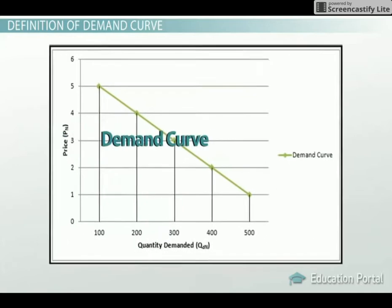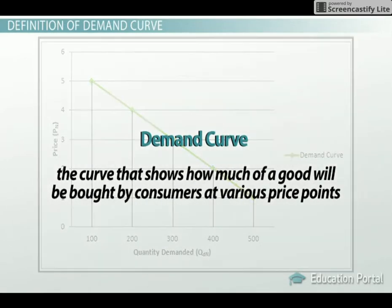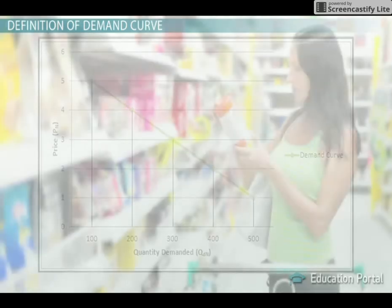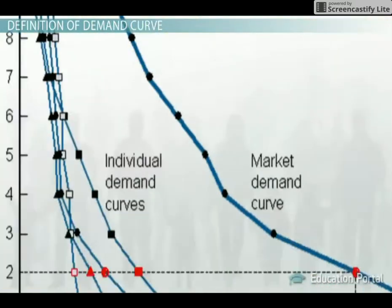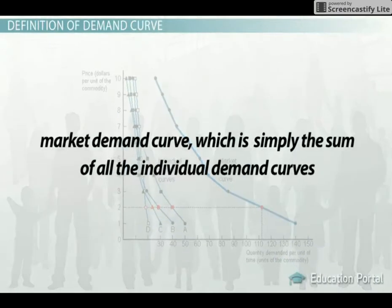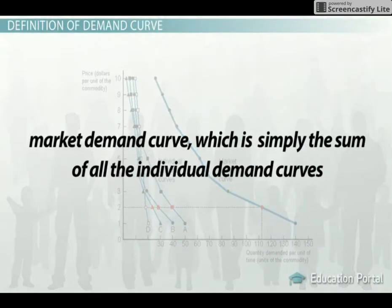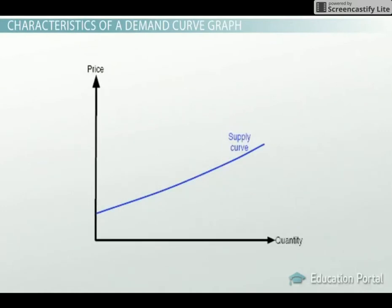One of the basic graphs in microeconomics is referred to as the demand curve, and is the curve that shows how much of a good will be bought by consumers at various price points. In microeconomics, we often look at the demand curve for individuals. In macroeconomics, we often focus on the market demand curve, which is simply the sum of all the individual demand curves. The demand curve is graphed with the same axis as a supply curve in order to allow the two curves to be combined into a single graph.